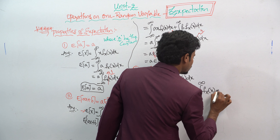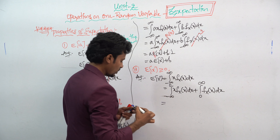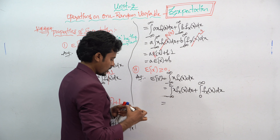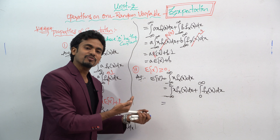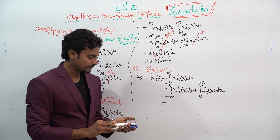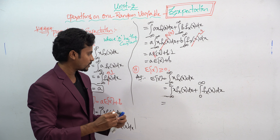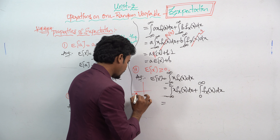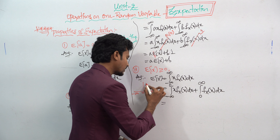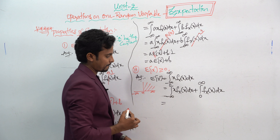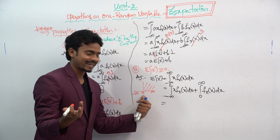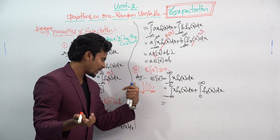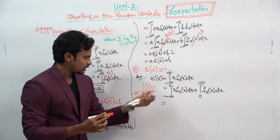We split the interval: integration from minus infinity to 0 of x times f(x) dx, plus integration from 0 to infinity of x times f(x) dx. In this property, we need to check that E(x) ≥ 0, so the minus infinity to 0 part is neglected.